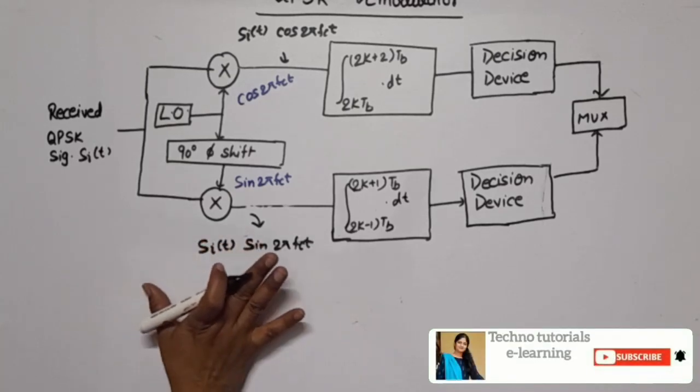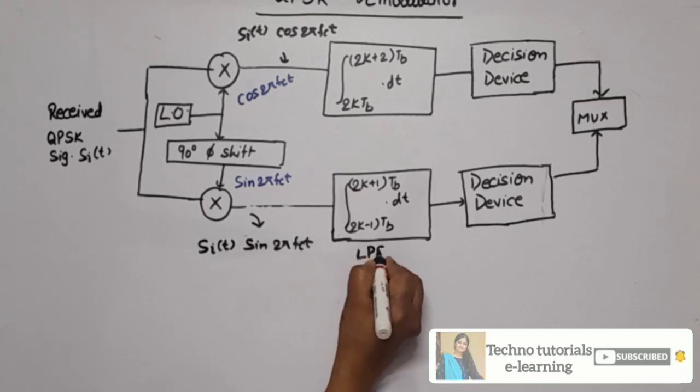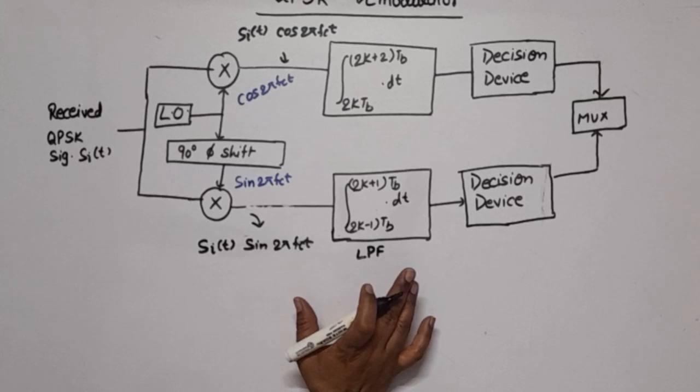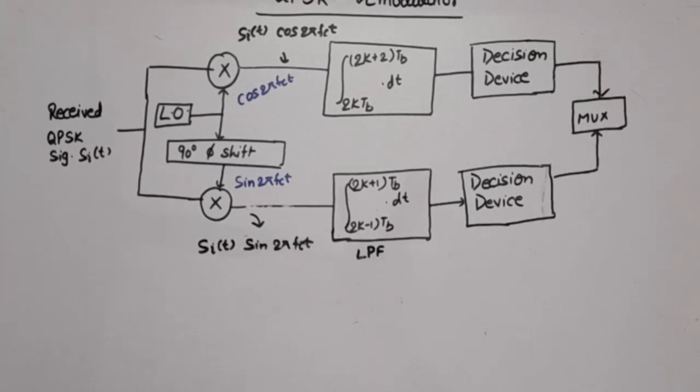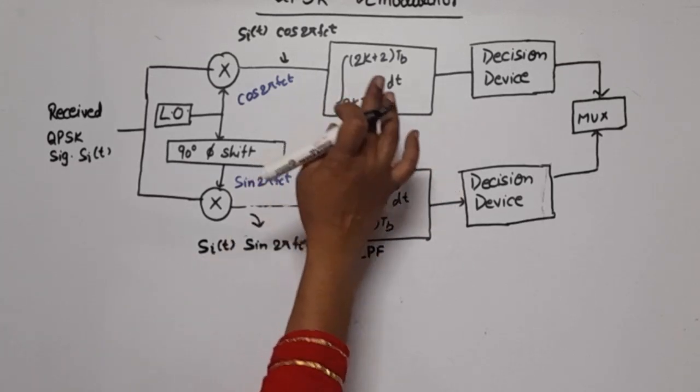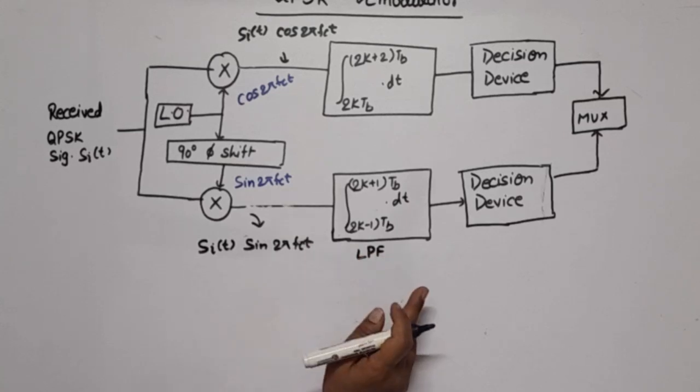The output of both product modulators is applied to low pass filters. The integrator basically works as a low pass filter. Both low pass filters integrate for 2 tb duration because in case of QPSK we transmit 2 bits per symbol. For this, 2k tb to 2k plus 2 tb, and 2k minus 1 tb to 2k plus 1 tb.